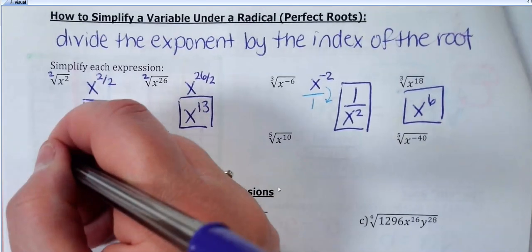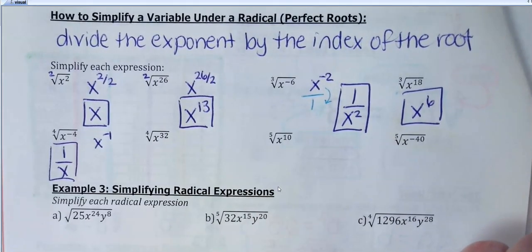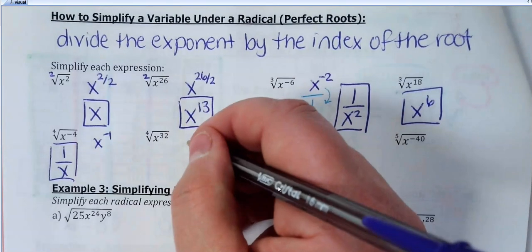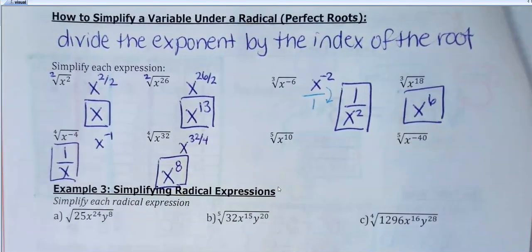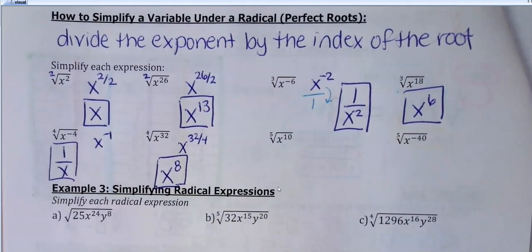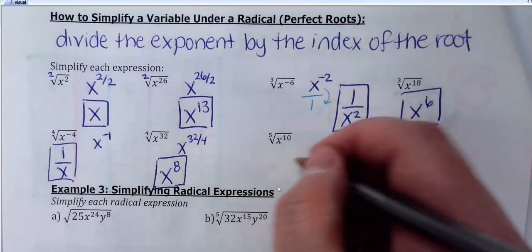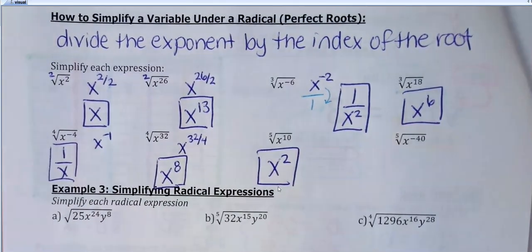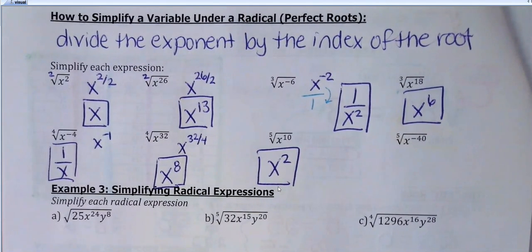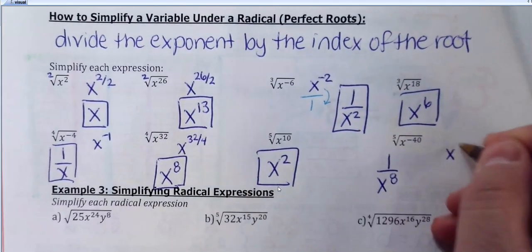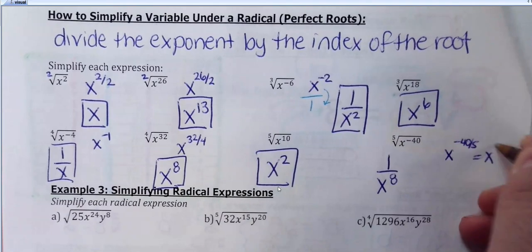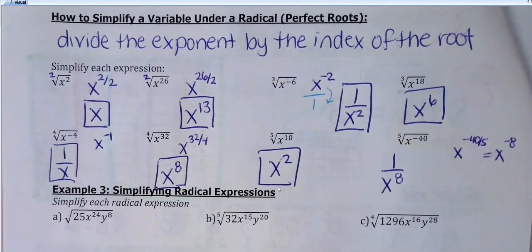What about the fourth root of x to the 32nd? 32 divided by 4 is 8 — so it should be just x to the 8th. What if I did the fifth root of x to the 10th? x squared — done. Now the last one's a little tricky because I've got a negative exponent. What would you write down for the fifth root of x to the negative 40th? This would be 1 over x to the 8th — divide the exponent by the root: negative 40 divided by 5 gives x to the negative 8, and then to take care of that negative exponent, turn it into a fraction.